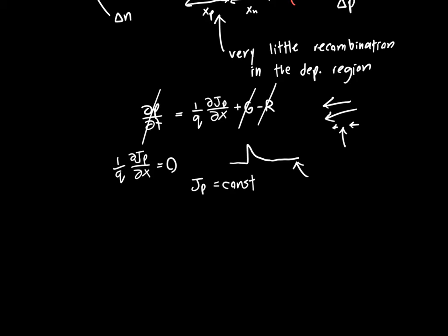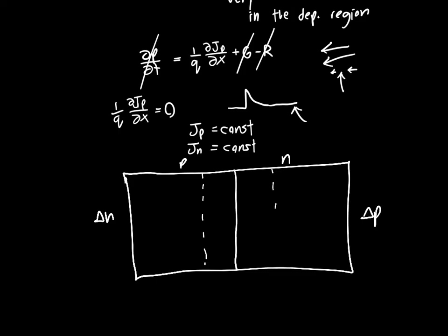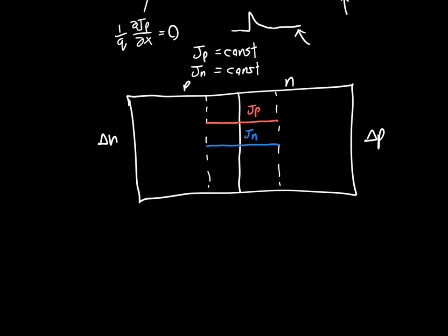If we do a similar analysis we get that the electron current must also be constant. This is really helpful because remember we said we wanted to solve the continuity equation for delta N on the P side and delta P on the N side. Now we're saying that the hole current, which I'm going to denote in red, J_P, is constant throughout the depletion region. We don't know what its value is but it's constant, and the electron current is similarly constant as well. In steady state, if we're assuming no accumulation of charge at any point in the semiconductor, then at any point the total current I, or similarly the total current density J, must be the same. So J is constant throughout the entire PN junction.